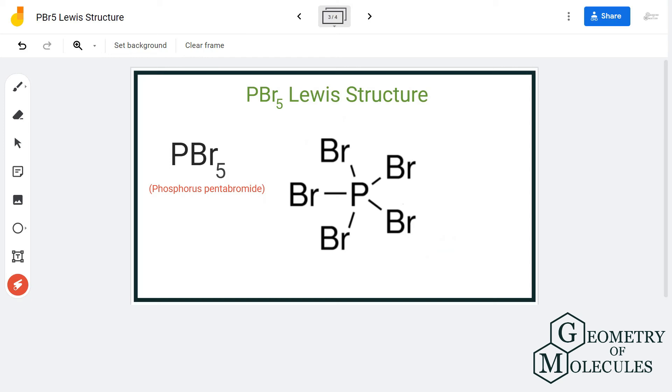The formal charges on both phosphorus and bromine will be zero, which means this is the most stable structure and the accepted Lewis structure for phosphorus pentabromide.